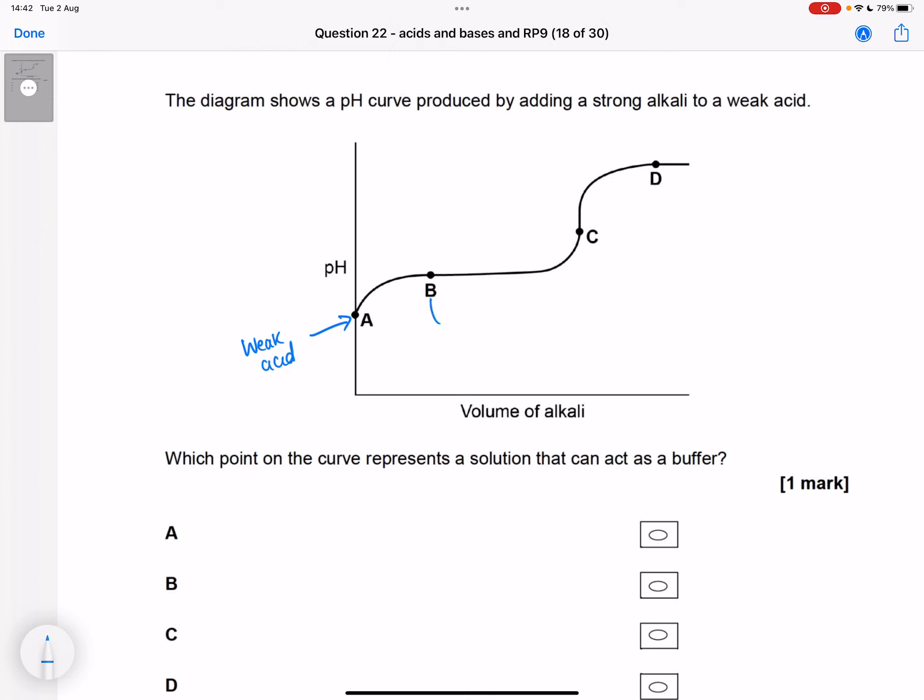As we start to add alkali, some of the weak acid will have turned into salt because acid plus alkali equals salt and water. But because we haven't added enough to hit equivalence yet, we have a mixture of weak acid and salt.